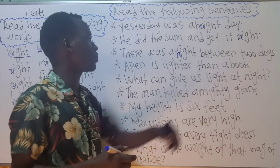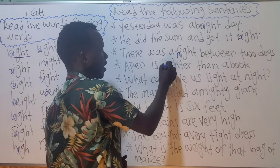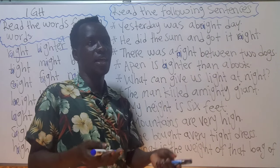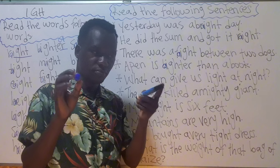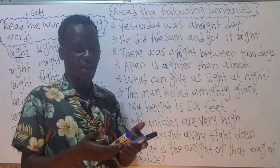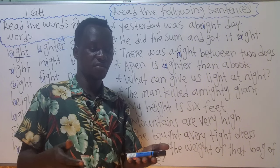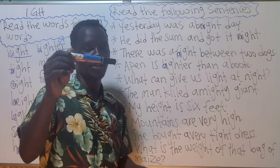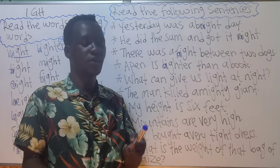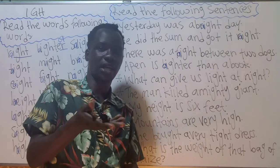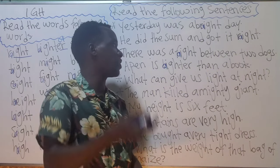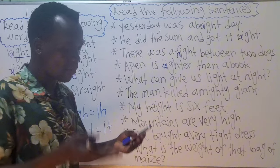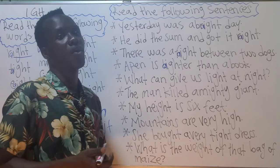Number four: 'A pen is lighter than a book.' Invisible A is here in 'lighter.' This is about weight — the less weight. If you compare a pen and a book, the book could be a little heavier and the pen is lighter because the book is big and thick while the pen is small and thin. A book is heavy and a pen is quite light.